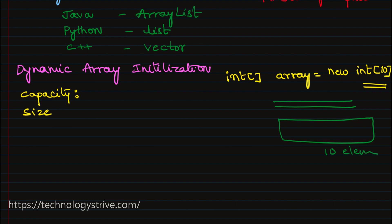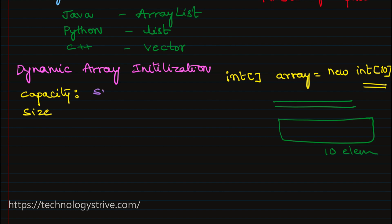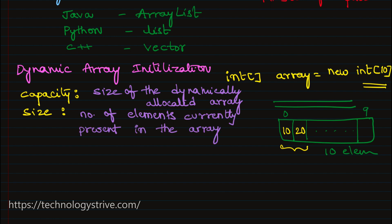This maximum number of elements the array can hold is called capacity. Size, on the other hand, is the number of elements currently present in the array. For example, if we insert two elements — say 1 and 20 — then size is 2. For simplicity, let's initialize an array with size 1. So capacity is 1 and size is 0.